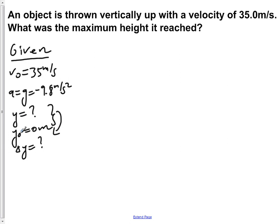Because y minus y naught is simply the height we want minus 0 meters, which is simply the height we want, delta y is also what we're trying to solve for.